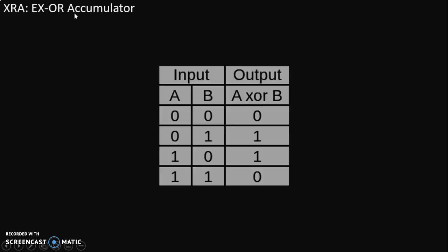To understand this instruction, one should know the truth table of the XOR gate. This is the truth table of a two-input XOR gate. Inputs are A and B and output will be A XOR B. Input conditions are 00, 01, 10, 11. When inputs are 00, output becomes 0. When inputs are 11, output becomes 0. So when inputs are the same, output becomes 0. And when inputs are different, output becomes 1. For 01 output is 1, and for 10 output is 1.